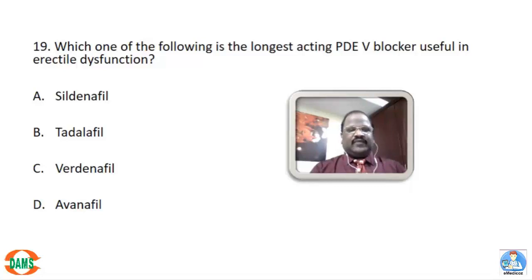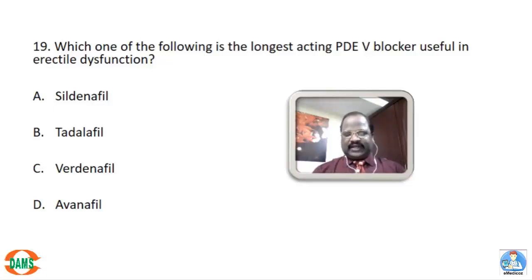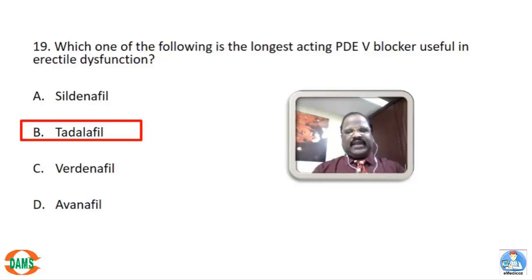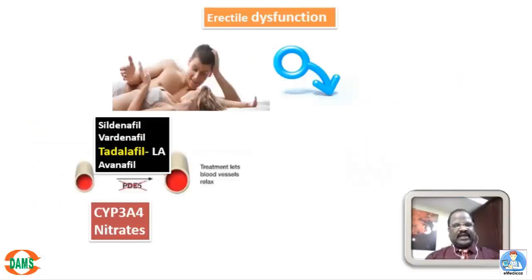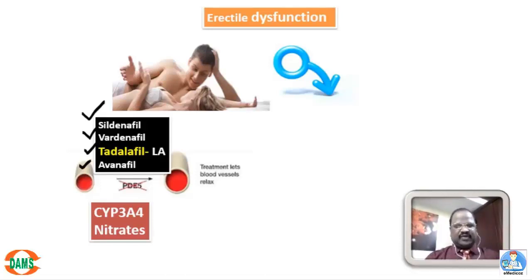Question 19: Which is the longest-acting phosphodiesterase-5 (PDE5) enzyme blocker useful for treatment of erectile dysfunction? Options: sildenafil, tadalafil, vardenafil, avanafil. The right answer is option B, tadalafil. PDE5 blockers include sildenafil, vardenafil, tadalafil, and avanafil. Tadalafil is the longest acting.